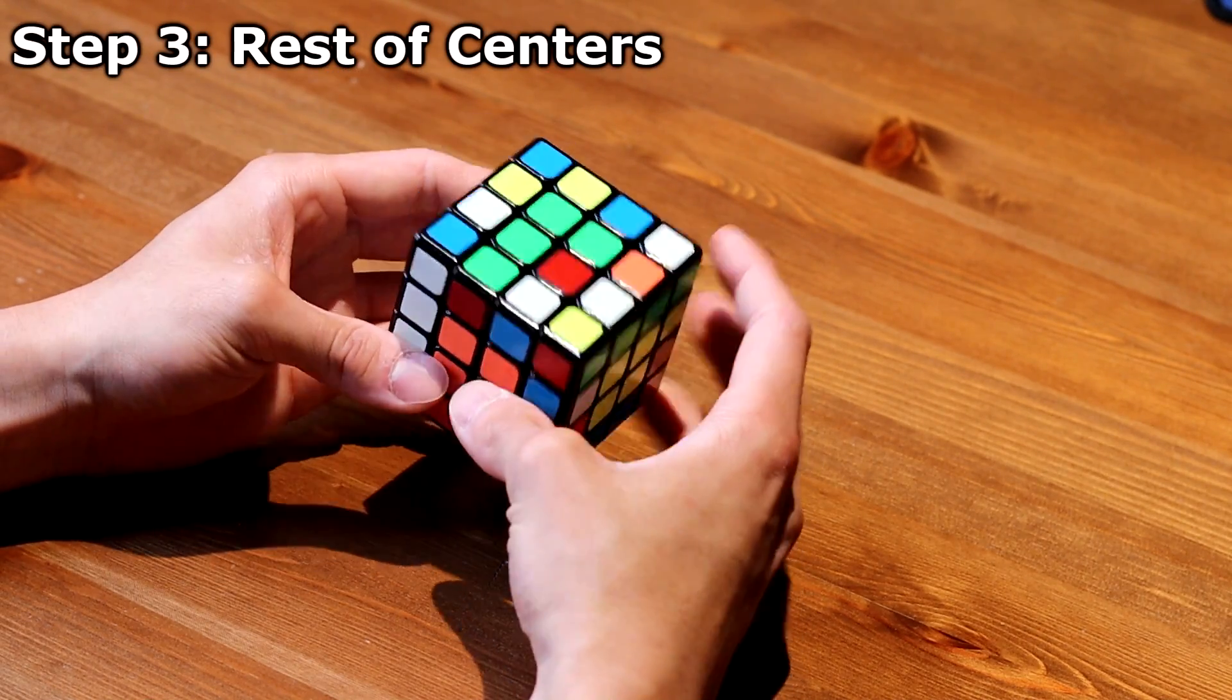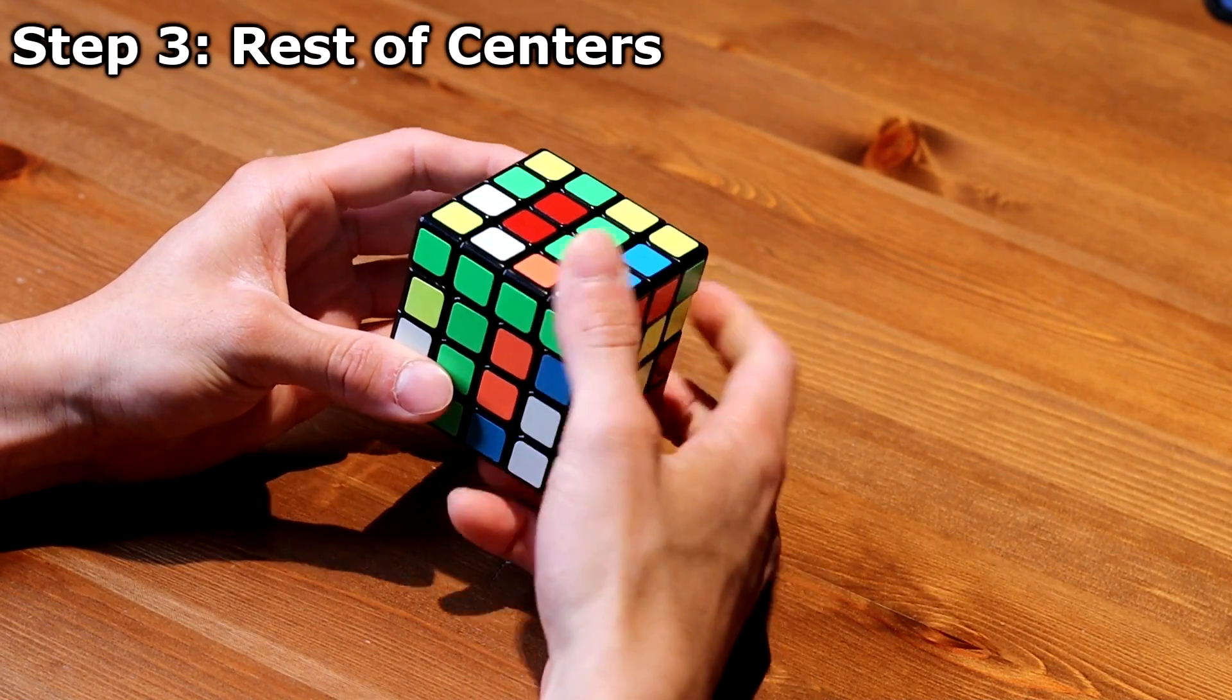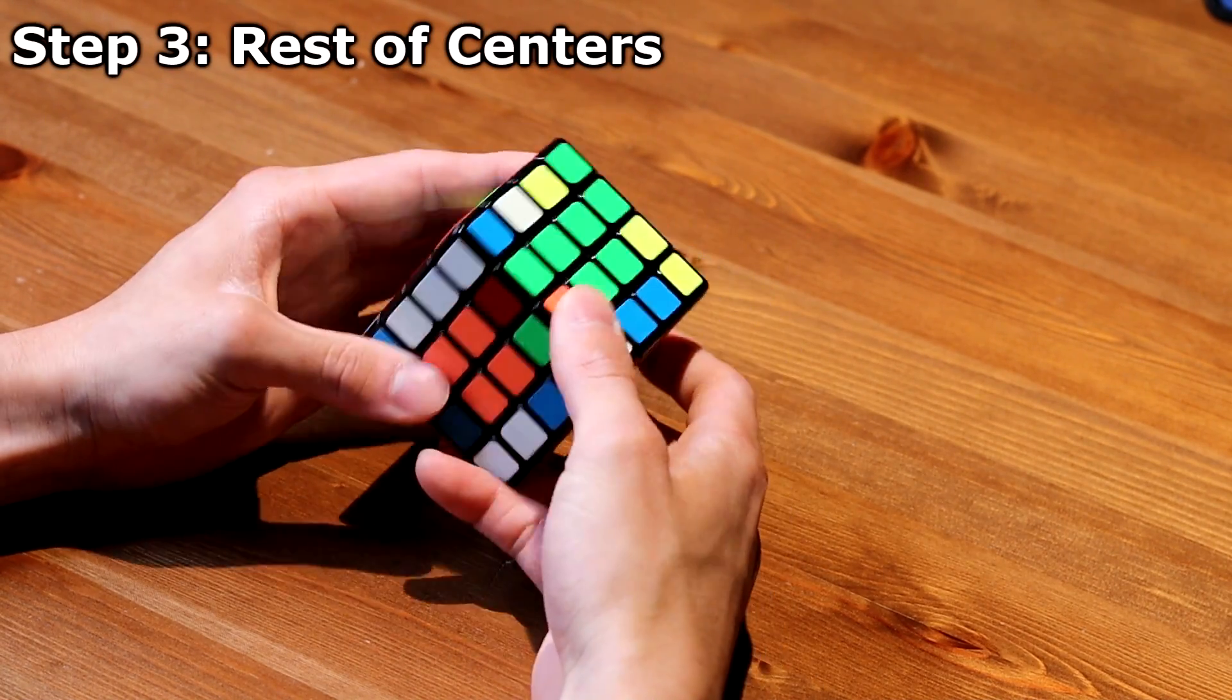Now next to orange is green, so I notice I can just line this up and then put it right here and put it back down. So all six centers are done.